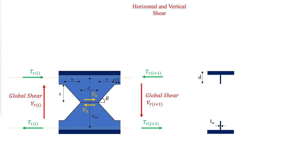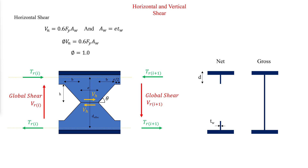Vertical shear should be checked using the global shear force calculated at each opening and resisted by the net section at web openings or the gross section at web posts. The horizontal shear force VH from the web post buckling calculation can be used to check horizontal shear, and the available horizontal shear strength is then taken as follows.